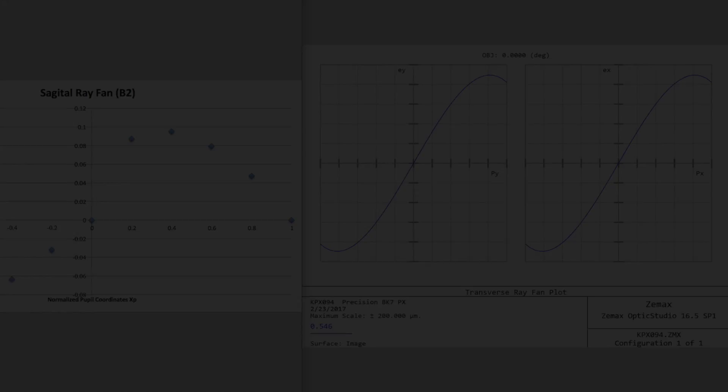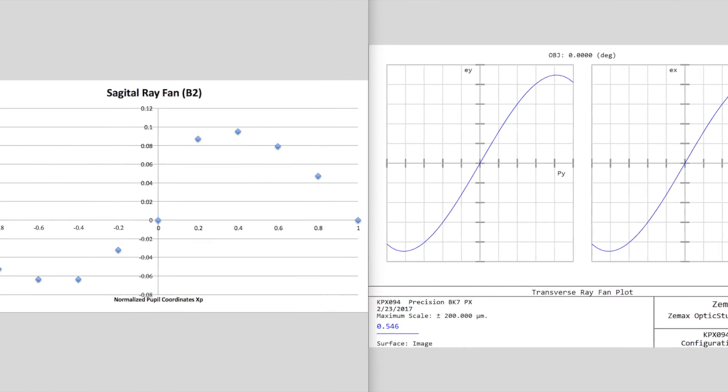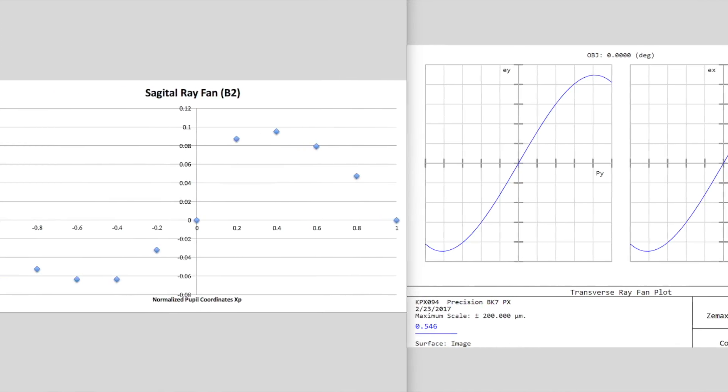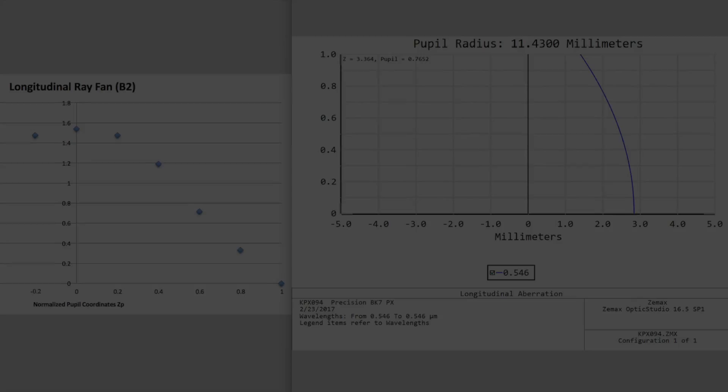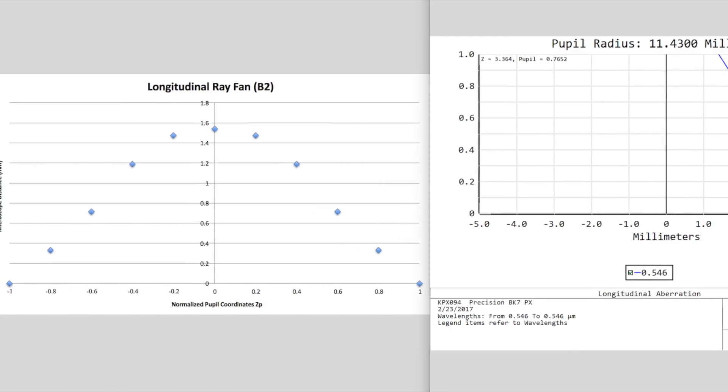After comparing the measured ray fan and the longitudinal aberration plots to the Zemax simulation, we observed that when the lens was oriented to minimize the amount of spherical aberration present in the system, our ray fan and error plots closely resembled the Zemax simulation.